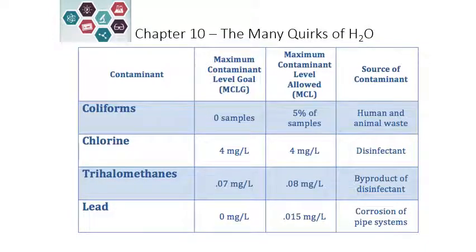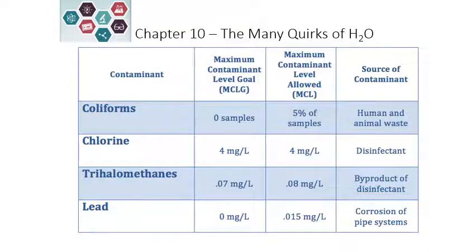For trihalomethanes, there is a maximum contaminant level goal of 0.07 parts per million, and the allowable level is 0.08 parts per million. These are byproducts of disinfectants that produce trihalomethanes.